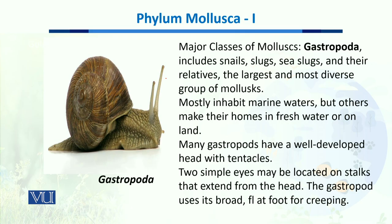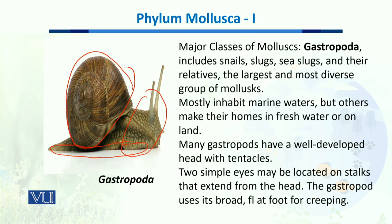When we talk about the major classes of Mollusca, Gastropoda is one of the largest. It includes snails — you can see the snail body, the foot of the snail, and the mantle composed of calcium carbonate. Snails, slugs, sea slugs, and their relatives are the largest and most diverse group of phylum Mollusca. Most inhabit marine environments, but many species also live in freshwater and on land. Many gastropods have well-developed heads and tentacles, with two simple eyes located on the stalks of the tentacles, which help them sense food and other structures.